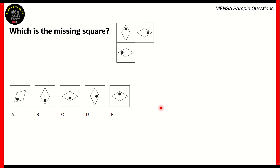Here's our first question. This is a set of four figures and the bottom right figure is missing. You need to find out which of the options — A, B, C, D, or E — is the missing square. We have three diamonds, and each diamond has a black spot on it, which is present on a narrow vertex.